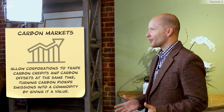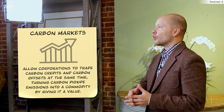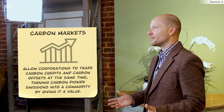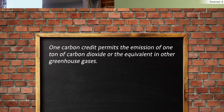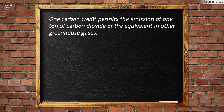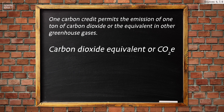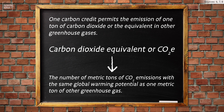To achieve the goal of carbon neutrality, today we have what is known as carbon markets. These allow corporations to trade carbon credits and carbon offsets, basically turning carbon dioxide emissions into a commodity by giving it a value. One carbon credit permits the emission of one metric ton of carbon dioxide, or the equivalent in other greenhouse gases. This can also be defined as a carbon dioxide equivalent, or CO2E, meaning the number of metric tons of CO2 emissions with the same global warming potential as one metric ton of other greenhouse gas.